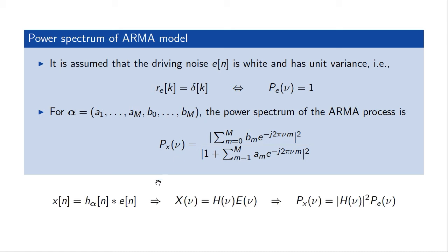This follows from the relation that the output process is simply the convolution between the input process and the driving noise. The Fourier transform of the output process will be the frequency response of the filter times the Fourier transform of the driving noise. Or in the spectral domain, the power of the output process is given by the squared magnitude of the filter's frequency response times the power spectrum of the driving process. And we already assume that this is equal to 1, which gives us this expression.